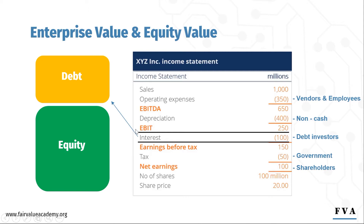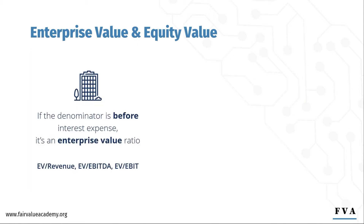When amounts are due to both debt and equity holders, we call this enterprise value. And when amounts are only due to equity holders, we call it equity value. To summarize: when you're working with EBIT, EBITDA, or revenue, since these are before interest expense, they are cash flows that are due to both debt and equity holders, and hence they form part of the enterprise value multiples.